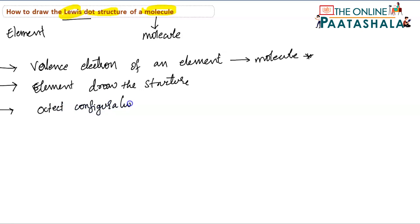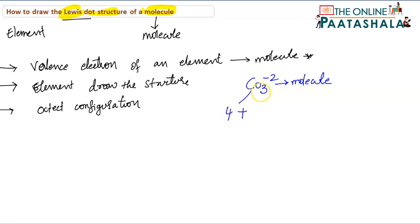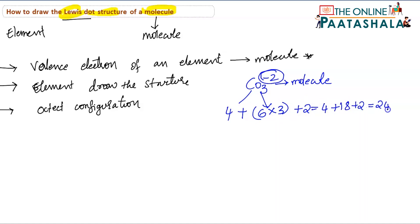Now we will take an example. I am taking CO₃²⁻ molecule. In carbon, how many valence electrons are there? 4 valence electrons. Next, oxygen has 6, and there are 3 oxygens, so 6 into 3. Here minus 2 is there, so you have to count those electrons also — that is 2. Total: 4 plus 18 plus 2 equals 24 electrons.